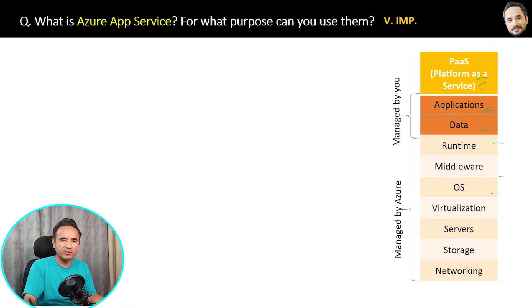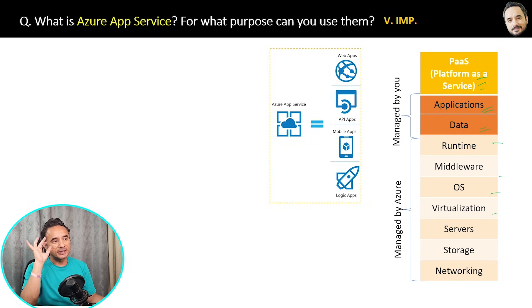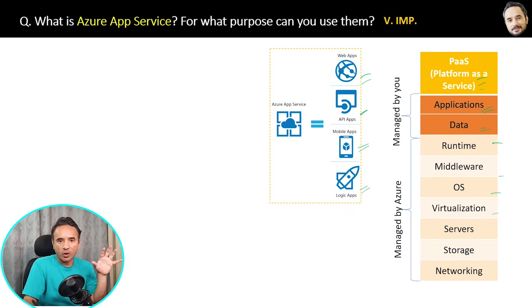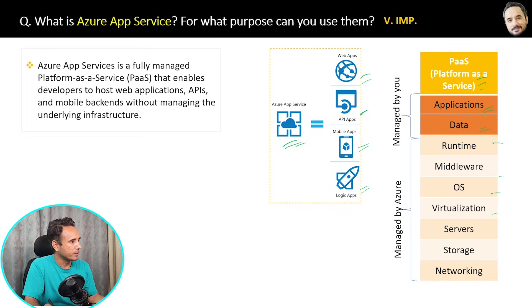You do not have to worry about servers or the operating system — you will not create virtual machines. You just create the Azure App Service and deploy your application there. Whether you need a web app, API app, mobile app, or logic app, the way to deploy them in Azure is via the Azure App Service. The simple definition: Azure App Service is a fully managed Platform as a Service that enables developers to host web applications, APIs, and mobile backends without managing the underlying infrastructure.